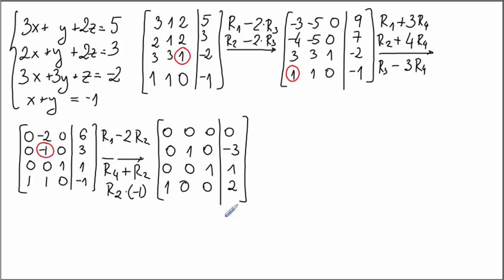Now I have 3 pivots, 3 pivot columns, 3 non-zero rows, which means my job is done. In addition, I have 3 variables, 3 unknowns, which means I have exactly one solution.